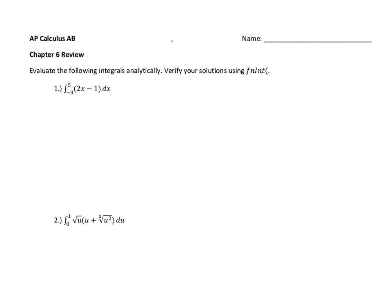Welcome again, everybody, to AP Calculus AB. Today we've got our Chapter 6 review. We're closing in on the end of our Calc 1 content from the textbook, with just a few sections out of Chapter 7 left to go. In Chapter 6, we were learning about further expanding upon antiderivatives and how we could apply that, including differential equations and separation of variables. So expect to see those mechanics show up, as well as connecting what an integral means in problem solving. Without further ado, let's take a look.